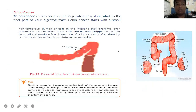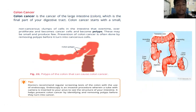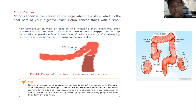Next is colon cancer — the cancer of the large intestine, which is the final part of your digestive tract. Colon cancer starts with small, non-cancerous clumps of cells in the intestines that over time proliferate and become cancer cells called polyps. Prevention of colon cancer is often done by removing these polyps before they turn into cancerous cells.